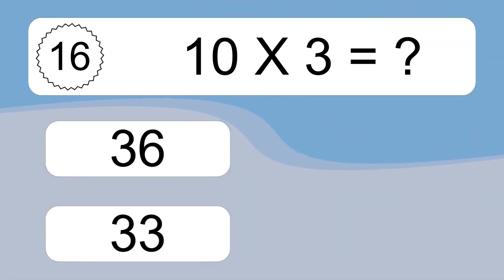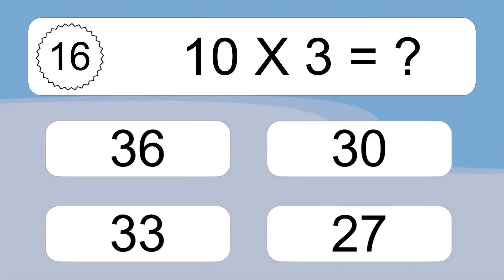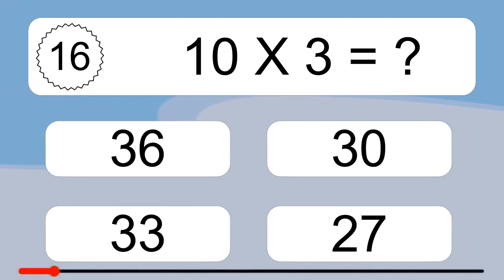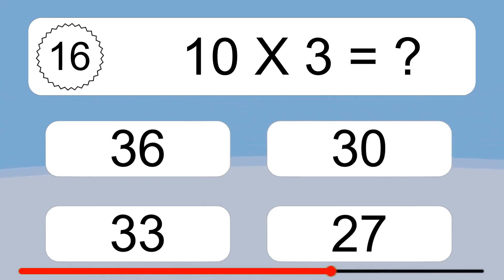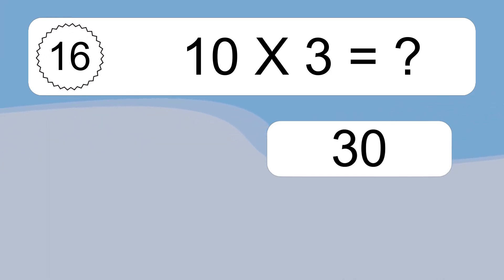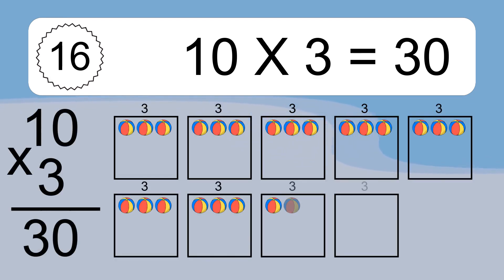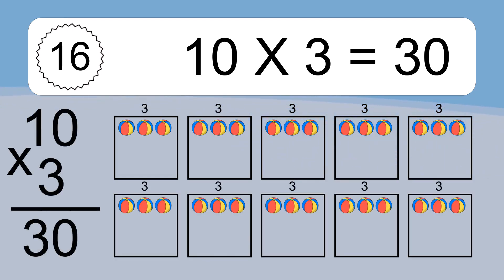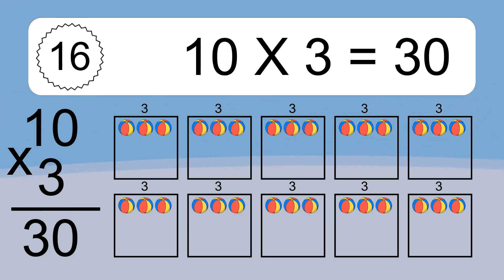10 times 3 equals what? 10 times 3 equals 30. We have 10 boxes, and each box has 3 colorful balls inside. If you count all the balls in all the boxes together, you will have 10 times 3 balls. This equals 30 balls.